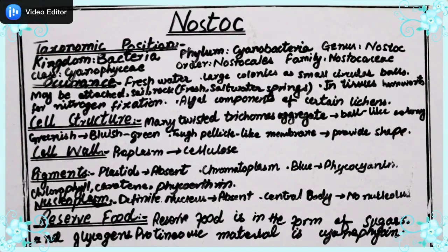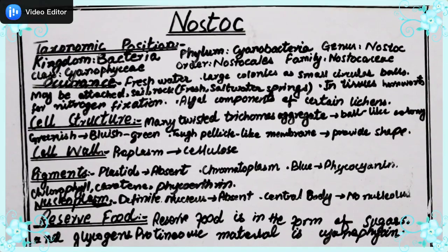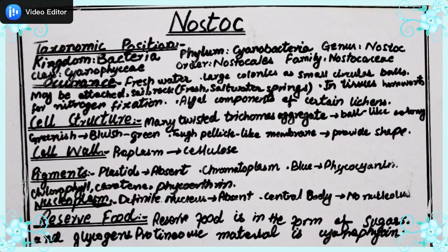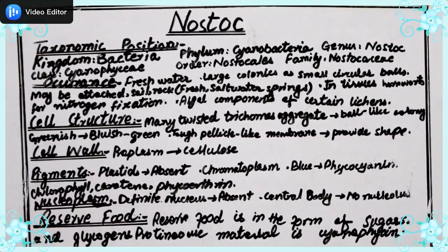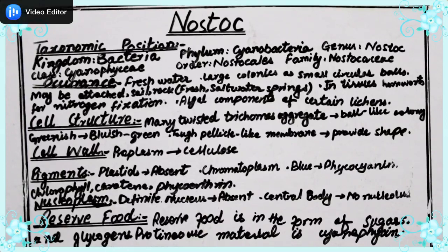The cell structure of Nostoc: many trichomes are twisted around each other and aggregate to form circular ball-shaped colonies. They are greenish to bluish-green in color due to their pigments. They have a tough pellicle-like surrounding wall or sheath which covers the entire colony and provides protection and shape to the colony.